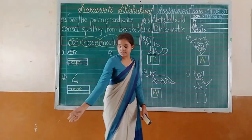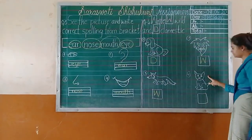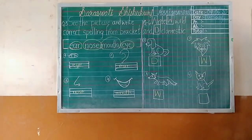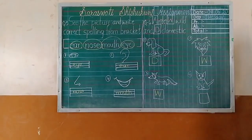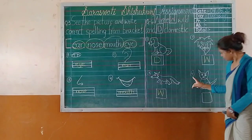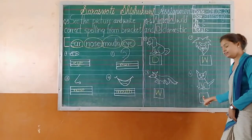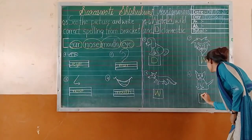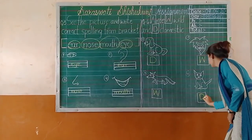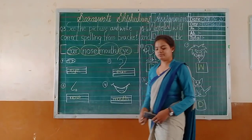Next — which animal is it? Cat. Yes, that is a cat. Cat is a domestic animal, so we will write D. Thank you, goodbye.